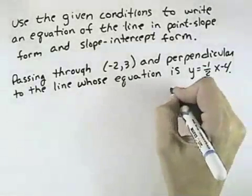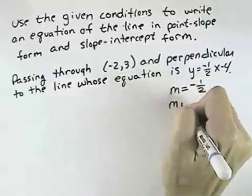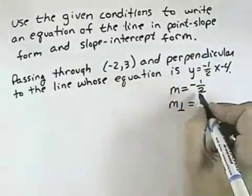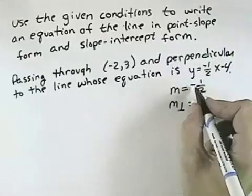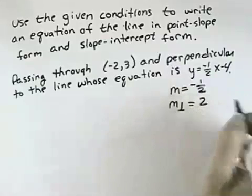Well, in this equation, the slope is the coefficient in front of x, which is -1/2. But we want the slope that's perpendicular to that. The perpendicular slope is the negative reciprocal, which means the opposite sign, which would be positive, and flip it over, which is 2. So the slope for our line is 2.